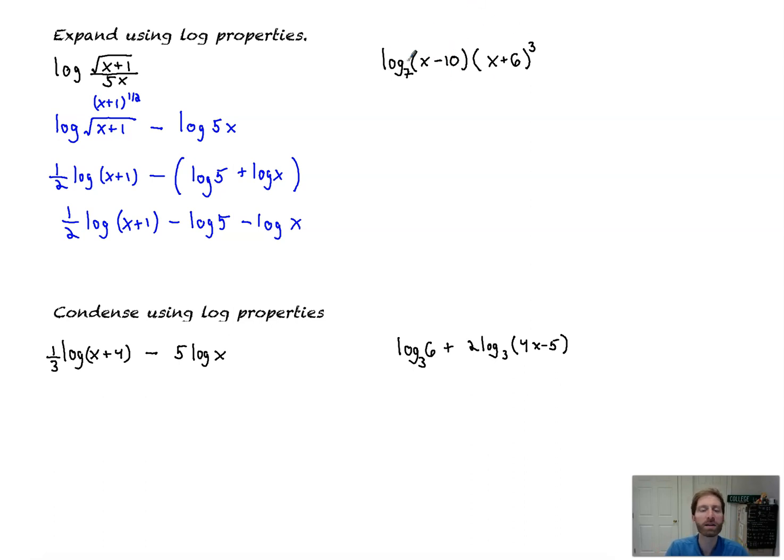So what do we do when we've got a product? Well, we're going to use that addition rule. You've got basically like a times b right here. So let's break it up. Log base 7 of x minus 10 plus log base 7 of x plus 6. Now from here, don't forget the cubed. We can bring that 3 out front and we'll be done. So we got log base 7 of x minus 10 plus 3 log base 7 of x plus 6.